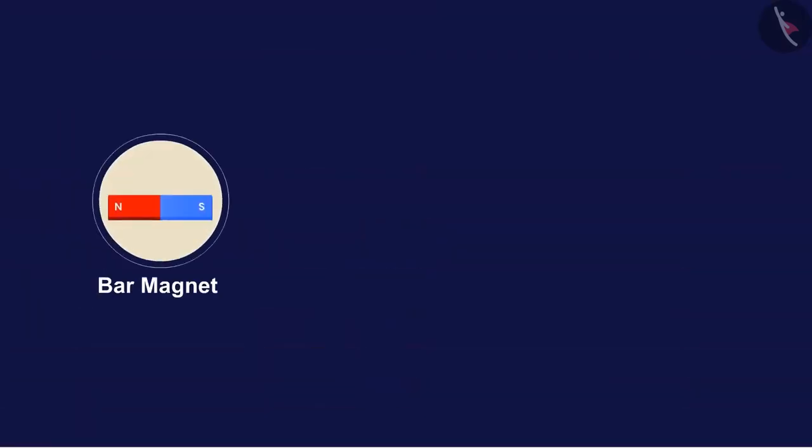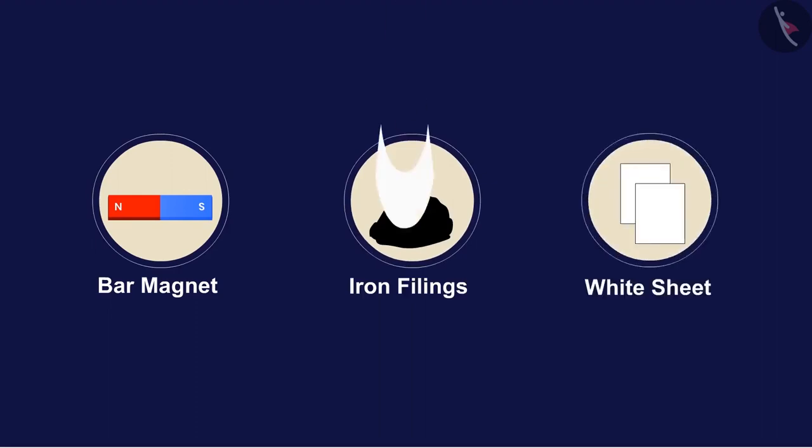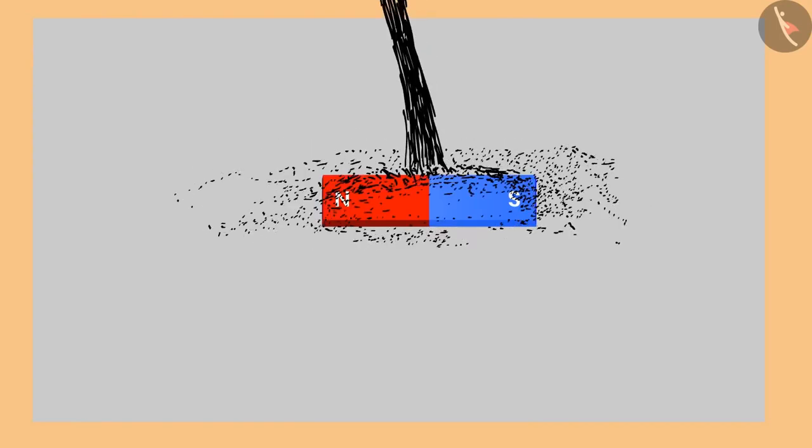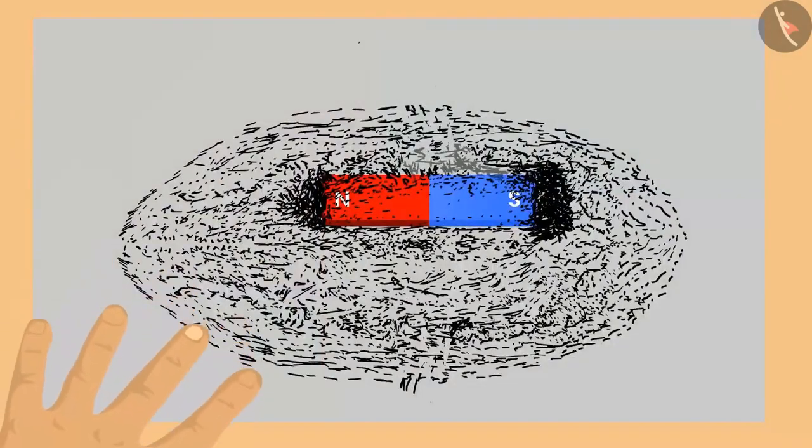To perform this activity, we need a bar magnet, iron filings, and a white sheet. Place the bar magnet at the center of the sheet and slowly pour iron filings over it. Tap the sheet like this two, three times.